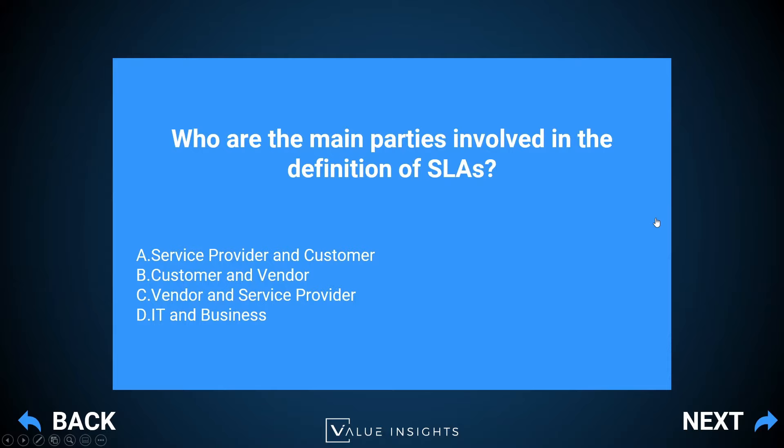SLAs tell the service provider what levels of service would make customers satisfied and what should actually be delivered to make them happy. Option B says customer and vendor — but most of the time as a service provider we don't care about all the other vendors our customers might have, except if we are involved in service integration management. Option C — vendor and service provider — is a special contract also defined in ITIL but it's called an underpinning contract or UC. Option D — IT and business — refers to internal parties of the same service provider organization, and if they have an agreement between each other it is called an OLA, or operational level agreement.